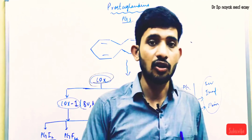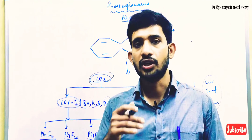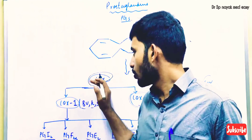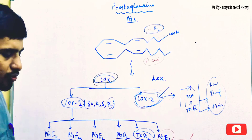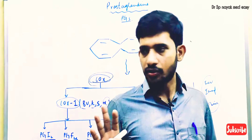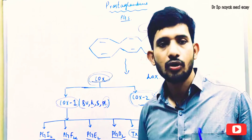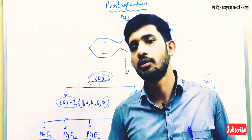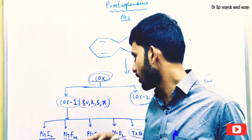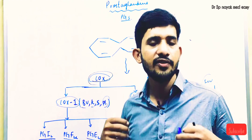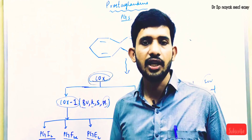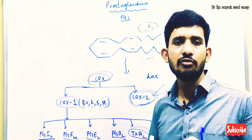Among COX inhibitors, NSAIDs — non-steroidal anti-inflammatory drugs — are very important. These drugs inhibit COX enzyme and by that stop production of prostaglandins. COX enzyme actually has two different isoforms: COX-1 (cyclooxygenase-1) and COX-2 (cyclooxygenase-2). COX-1 is always present in the body — it is present in blood vessels, kidneys, the GI tract, and in platelets. COX-1 mediates the synthesis of many prostaglandins with various pharmacological actions.